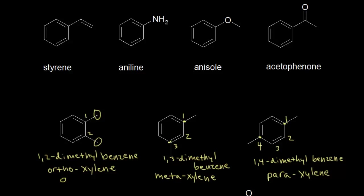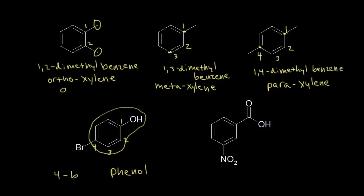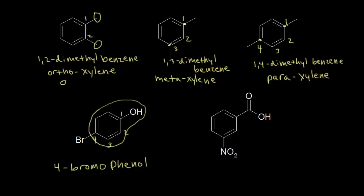Let's look at more examples of disubstituted benzene rings, using the monosubstituted parent names we memorized. This first molecule contains a phenol portion, so the parent name is phenol. For the bromine substituent, we can use a number — the bromine is at carbon 4 — giving us 4-bromophenol as an acceptable IUPAC name. Or, since the two groups are opposite each other on the ring, we can use the para designation: para-bromophenol, or p-bromophenol. Both are acceptable names.